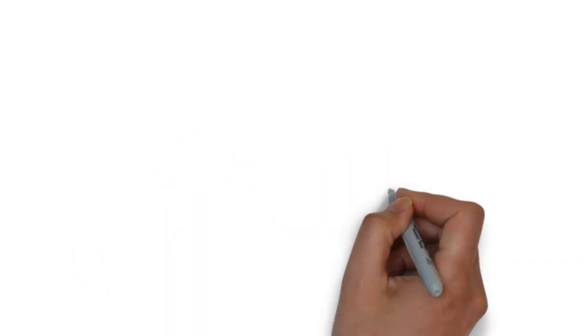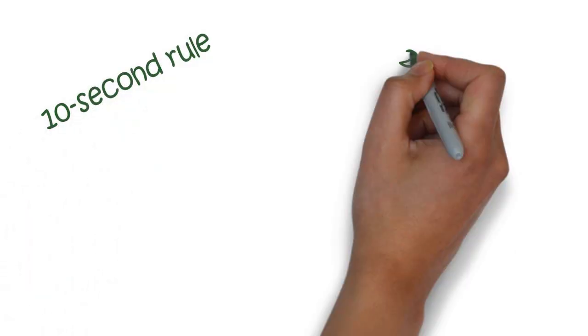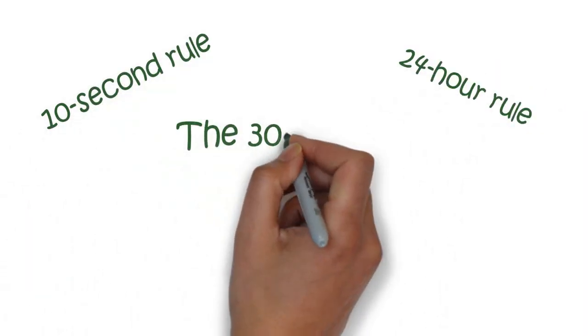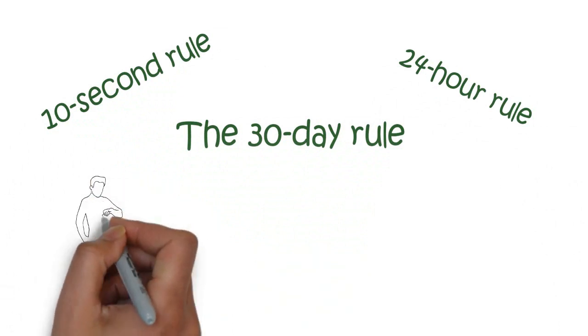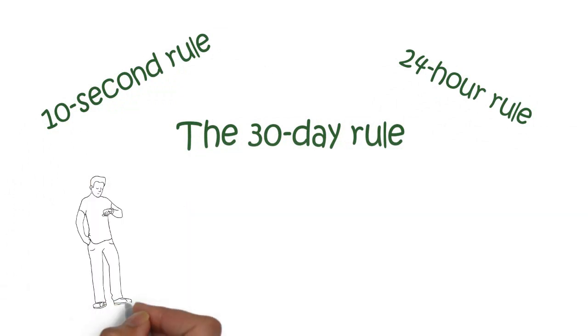Number 4. 30 day rule. Now, there are a lot of different versions for this rule that you might have heard of. For example, 10 second rule, 24 hour rule and 30 day rule. They all have the same concept: wait before you buy something.